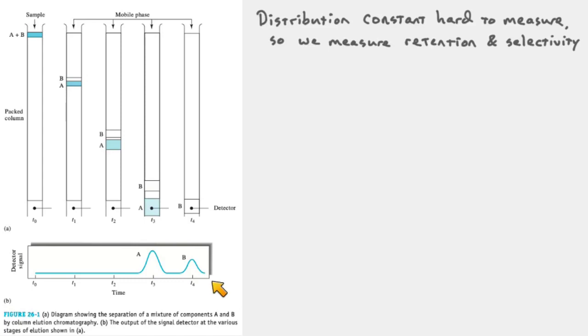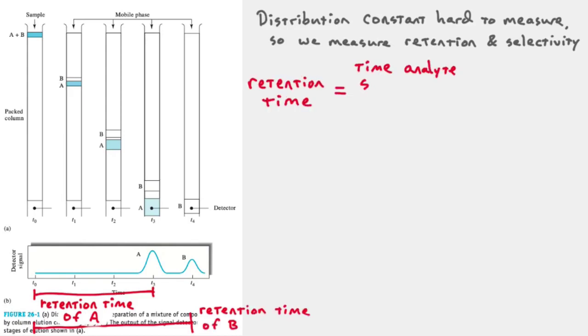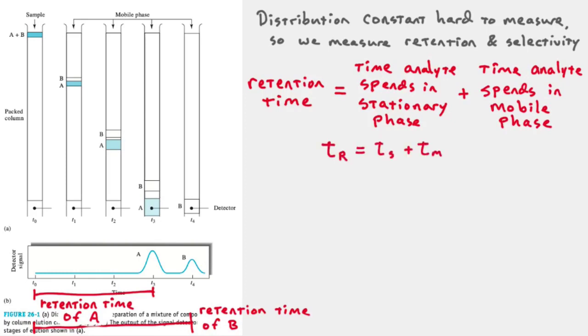Let's look at the chromatogram here on the left. We're going to talk about retention time. The retention time is easily measured. It's just how long it takes something to elute from the column. From the start time to when it elutes, this would be the retention time of A. This here would be the retention time of B. Retention time includes the time that your analyte spends in the stationary phase, and also the time that it spends in the mobile phase. So you can write this as TR retention time is stationary phase TS plus mobile phase TM. That's retention time. It's a number that we use a lot, because you can very easily get it from your chromatogram.